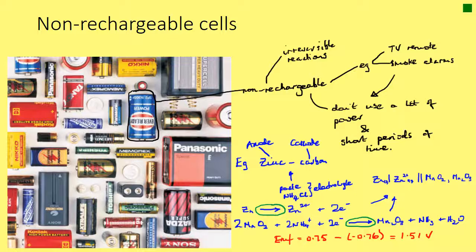Non-rechargeable cells use irreversible reactions — they can't go back the other way. Even if you were to apply an electric current in the opposite direction, they won't reverse those reactions.